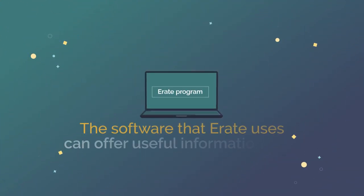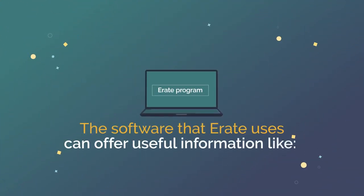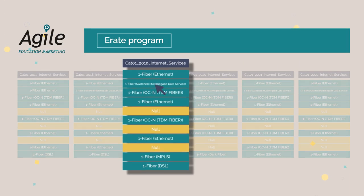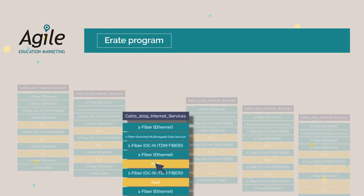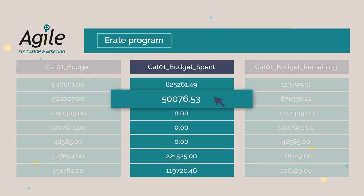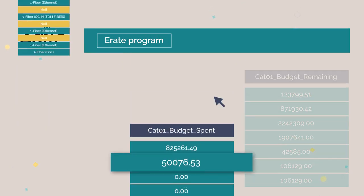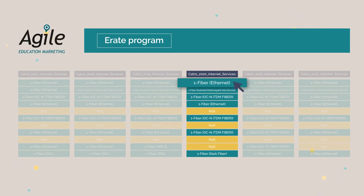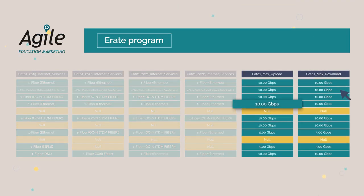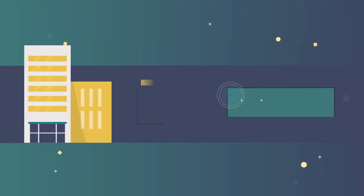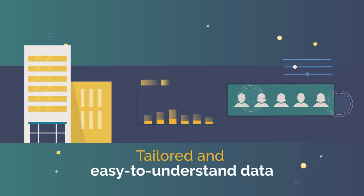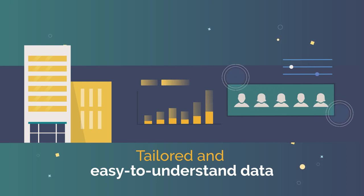The software that E-RATE uses can offer useful information like spending trends over the past five years, how much category funding they have spent, types of internet access, and how fast the internet access currently is. This data is packaged in a tailored, easy-to-understand data snapshot picture directly from the Universal Service Administrative Company.